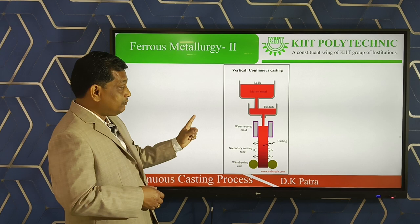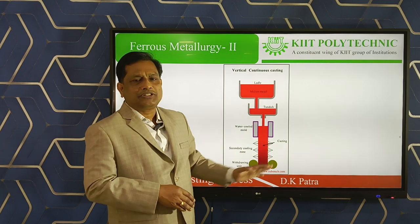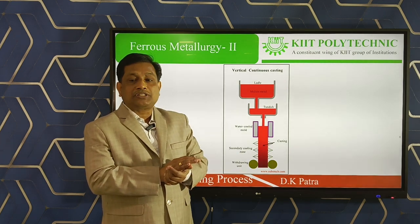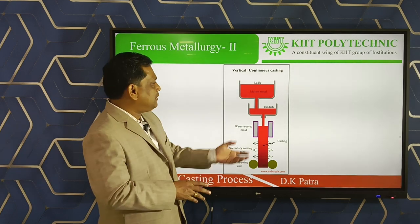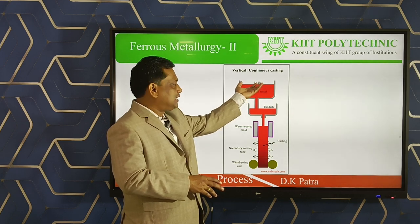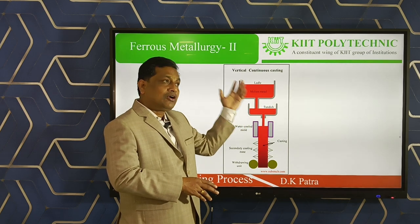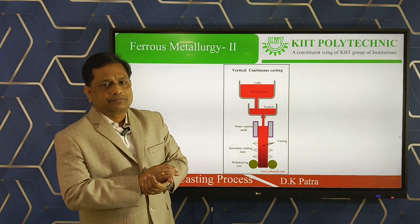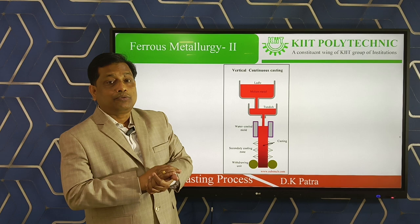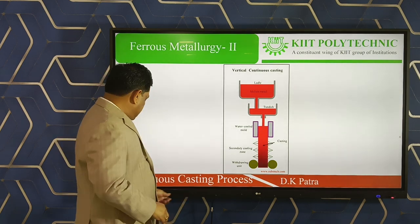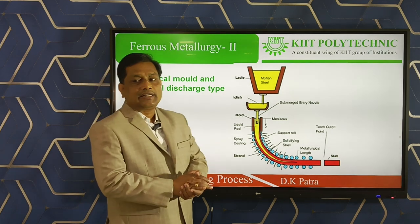One negative aspect of the vertical type is that in practice the shop height is very tall, making it quite difficult to hang the ladle and tundish at such heights. To reduce the shop height, a second process was developed — the vertical mold and horizontal discharge type.